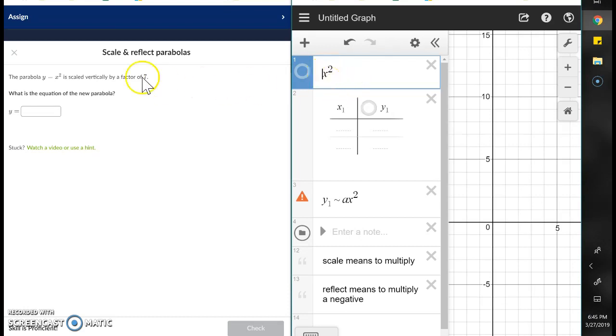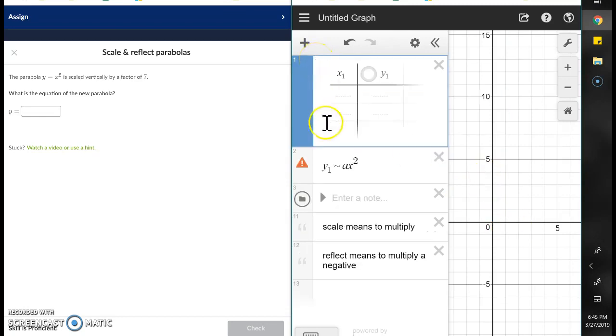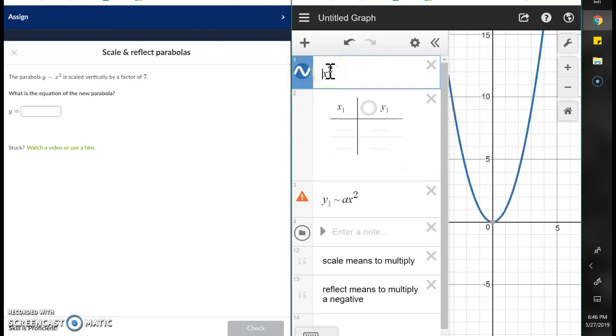The parabola in here, if we're going to scale, we're going to multiply by 7, so we've got a more narrow parabola than we would have.